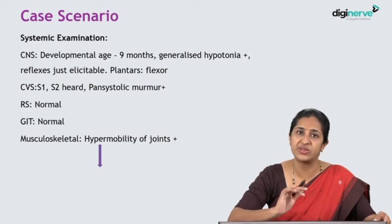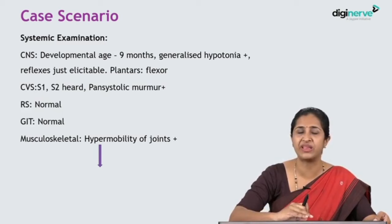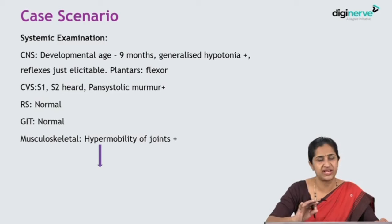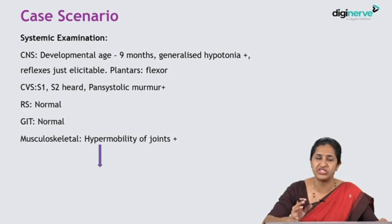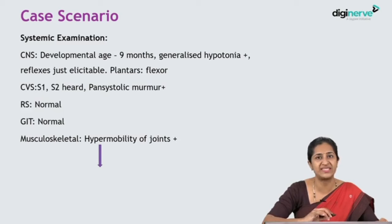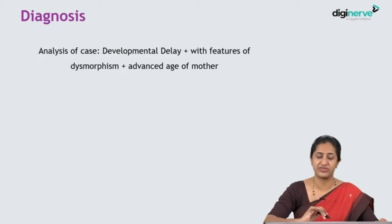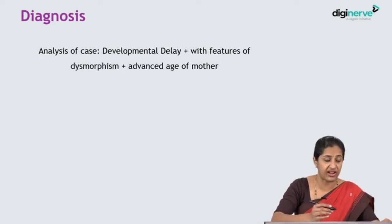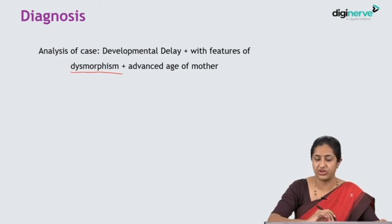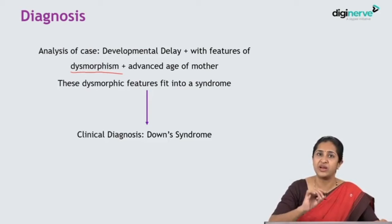With these findings, we have a child who has delayed developmental milestones, with an elderly mother. The child has been otherwise well with a normal birth and postnatal history. On examination, there are lots of dysmorphic features — features which are not like a normal child. The child has significant hypotonia with hypermobility and laxity of joints and ligaments. The probable diagnosis in this child, given the developmental delay, dysmorphic features, and advanced maternal age, is Down syndrome.